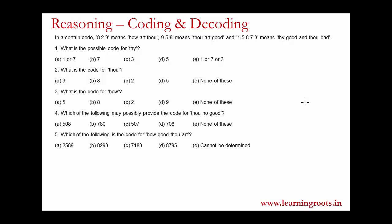In a certain code, 829 means 'how art thou'. So 'how art thou' is the normal English phrase and 829 is its representation. How can correspond to either 8, 2, or 9; art can correspond to either 8, 2, or 9; and thou can correspond to either 8, 2, or 9.